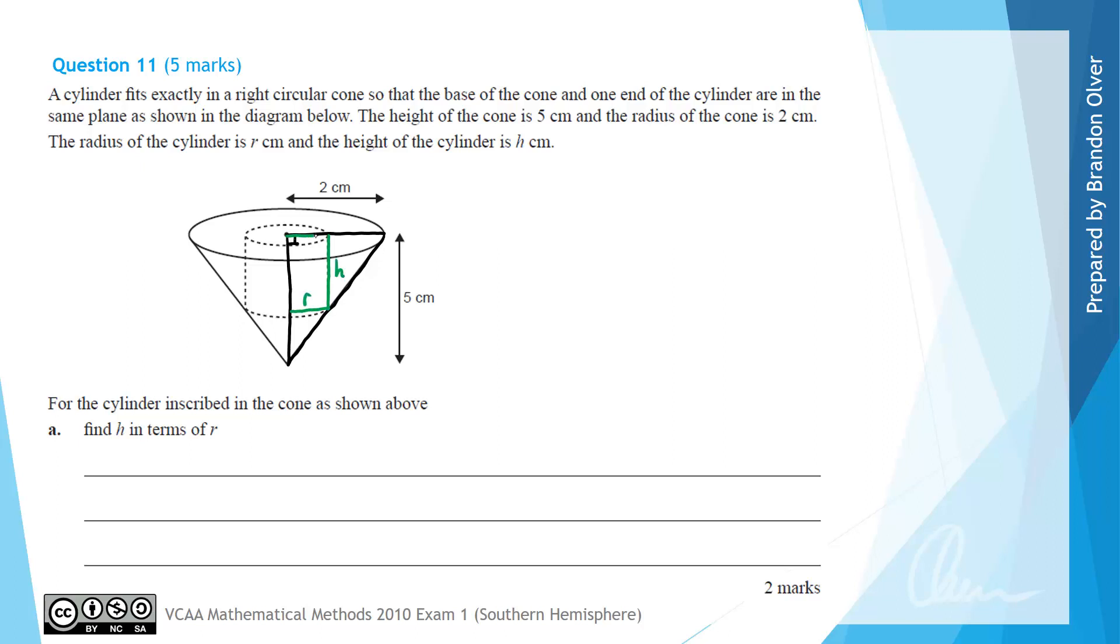Of course that length along the top would also be r for that cone. So drawing that out over here a little bit bigger, this is the right triangle that we get. We know that's a right angle and we know that that is 2 and that goes from there to there. That's the radius of the cone and that height is 5.